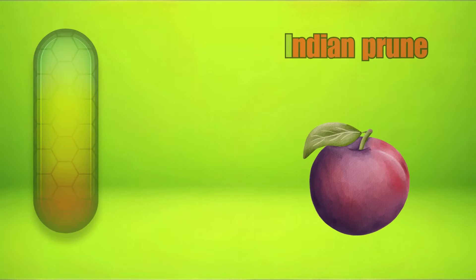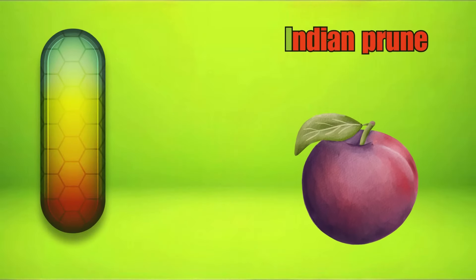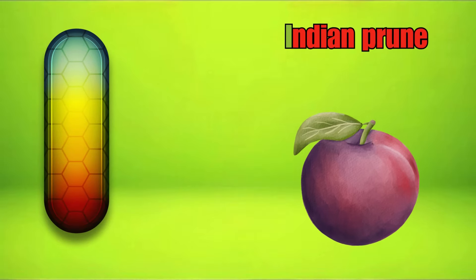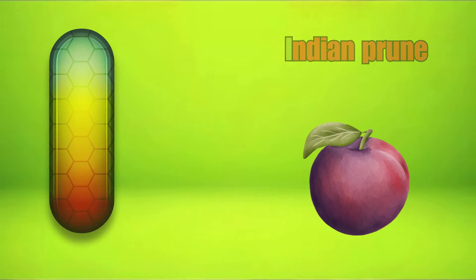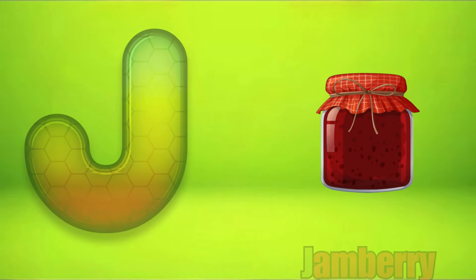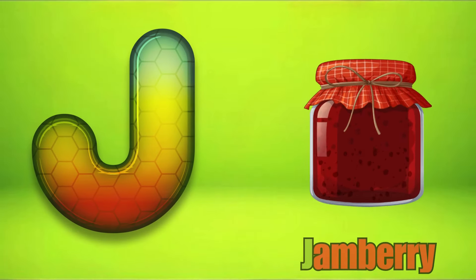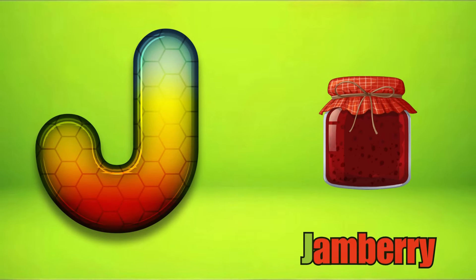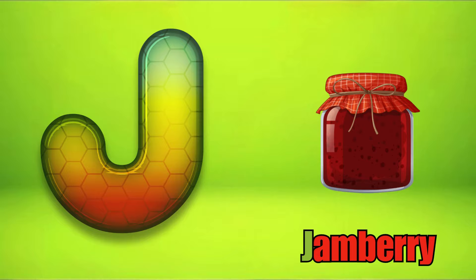I is for Indian Prune, Indian Prune. J is for Jamberry, J, J, Jamberry.